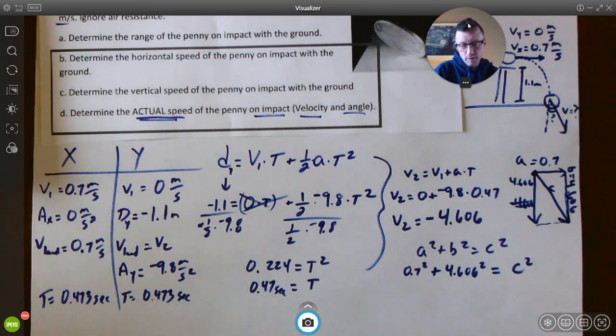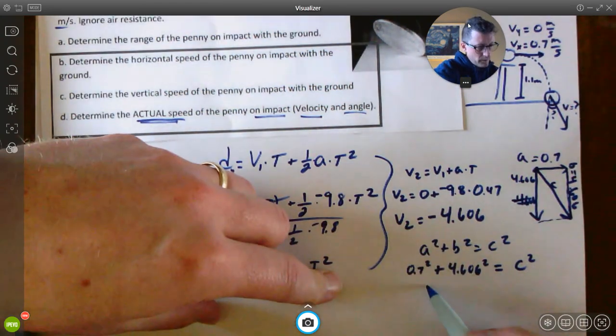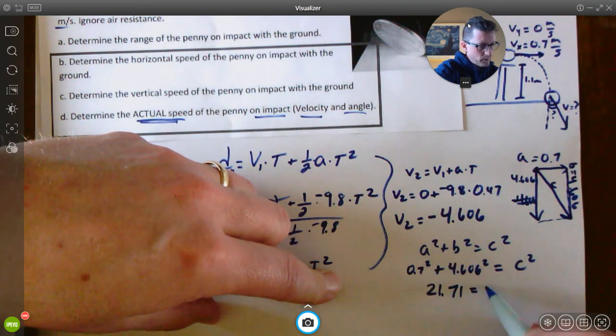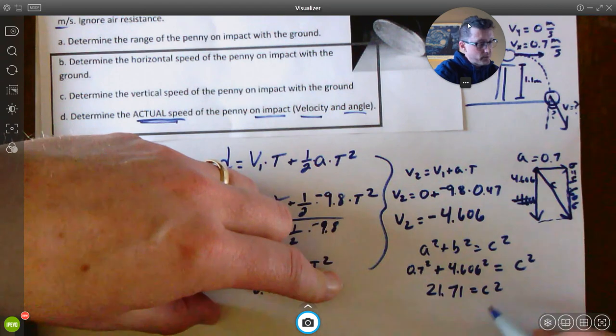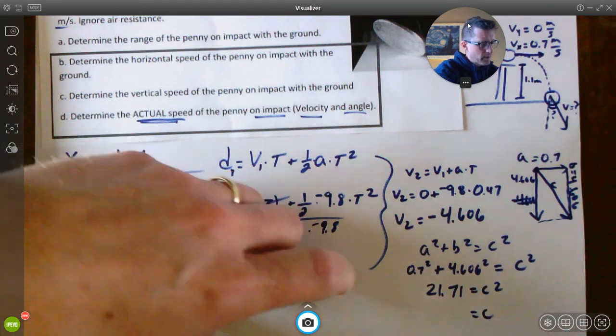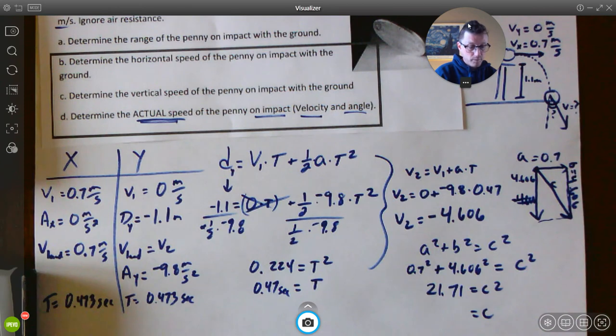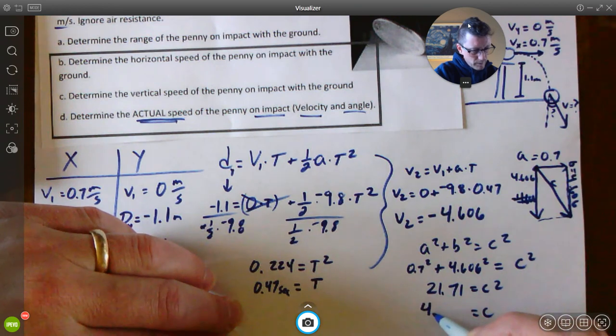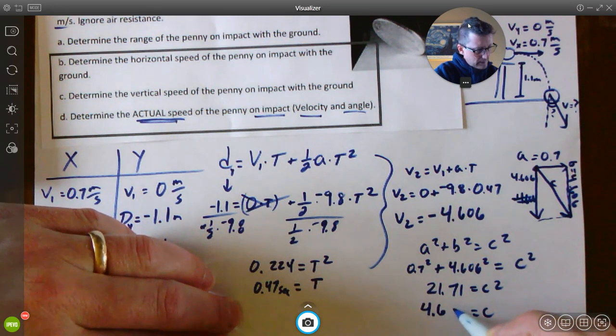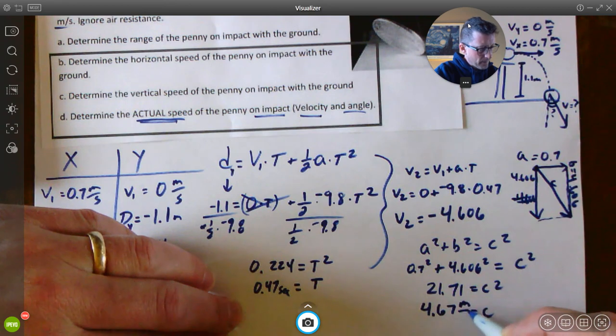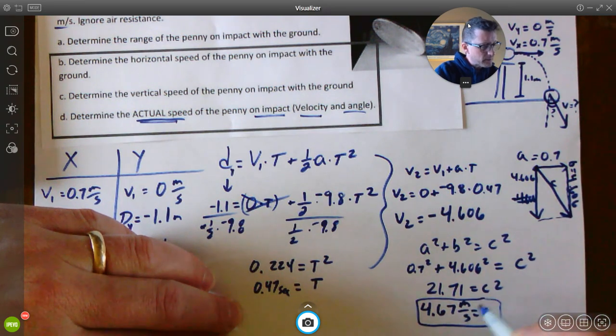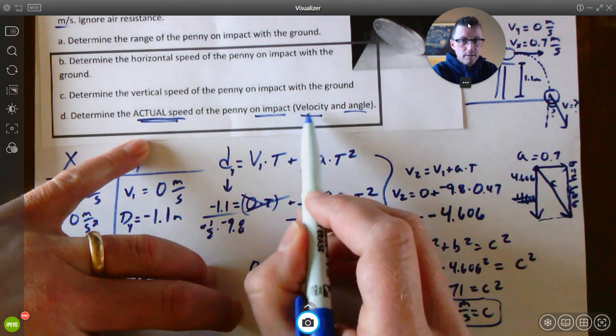So, go through, start calculating 0.7 squared plus 4.606 squared equals this number here. We've got 21.71 equals C squared. To get this squared away from the C, we've got to take the square root of that. So, C is going to be the square root of 21.71. And we get this number here, 4.67. That right there, ladies and gentlemen, that is your velocity. That is this piece right here.